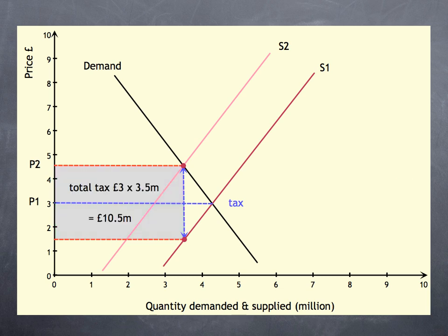The government tax revenue is equal to the grey box. In this case, that's £10.5 million.